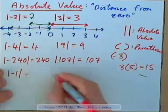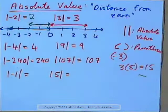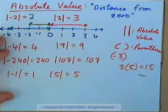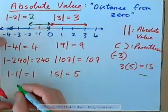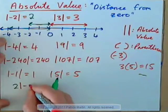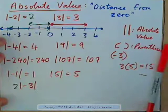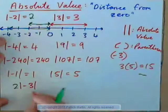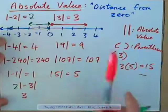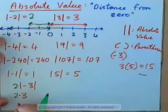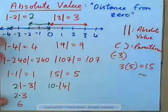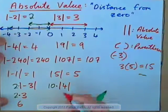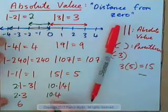The absolute value of negative one is positive one, and the absolute value of five is five. Now, what would this be? We could have, for example, two times the absolute value of negative three. If there's a two beside it, that means multiply. We should get the absolute value of negative three first — that's positive three. So what we have is two times positive three, which is six. Similarly, ten times the absolute value of four: the absolute value of four is four, and ten times that is just forty.